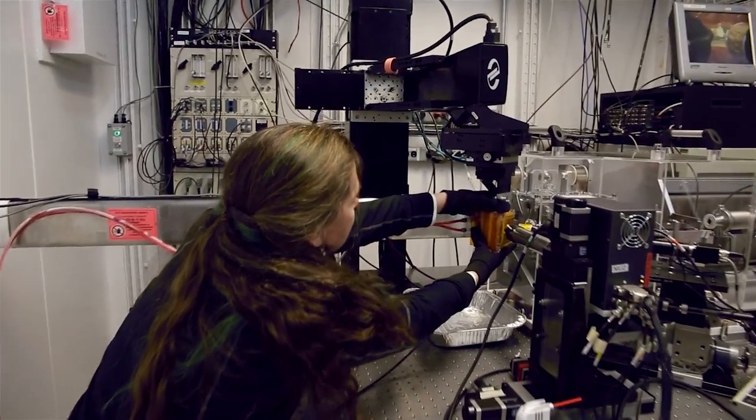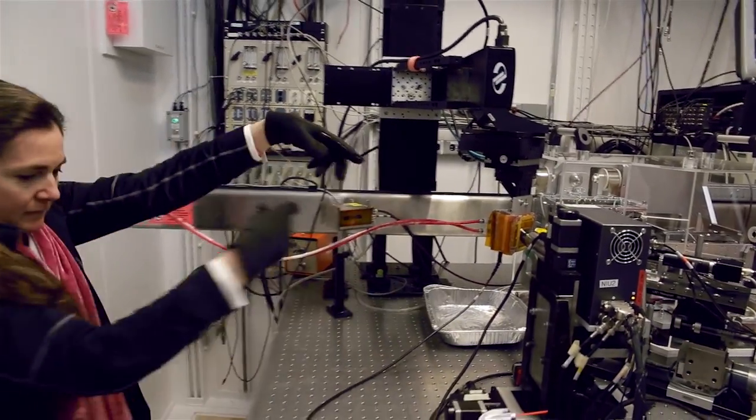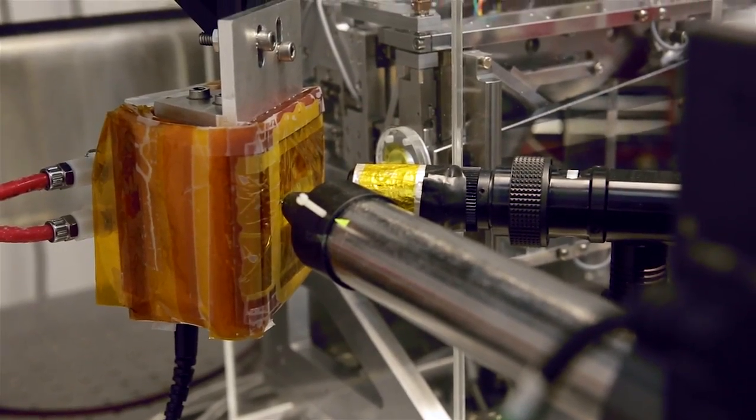We're looking at how the bromide, which is naturally in the sea water, comes up through the brine channels in the sea ice and gets onto the surface, and then we believe is picked up by blowing snow and lofted into the lower atmosphere.